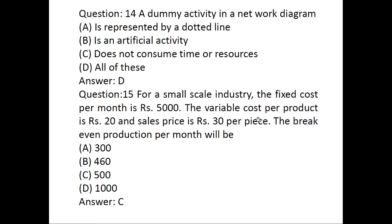For a small scale industry, fixed cost per month is 5000, variable cost per product is 20, and sales price per month. The break-even formula is fixed cost divided by sales price minus variable cost. So 5000 divided by 30 minus 20 equals 5000 divided by 10, which equals 500 units.